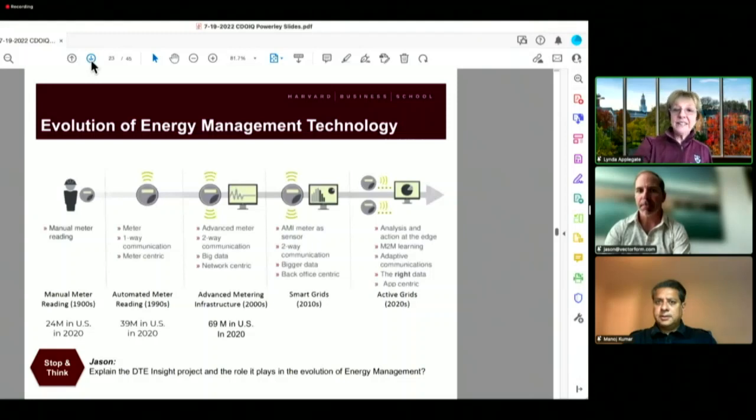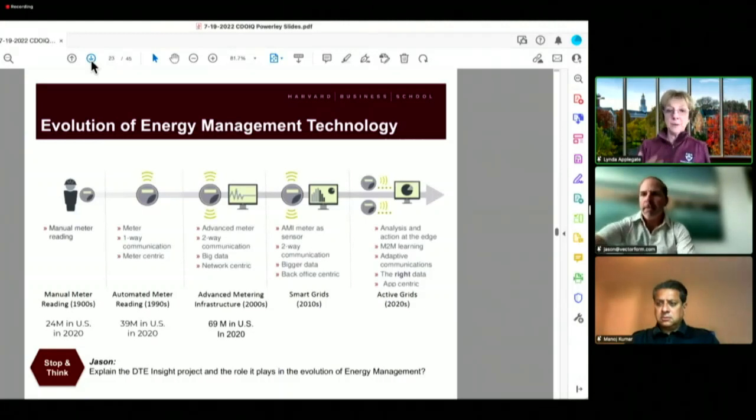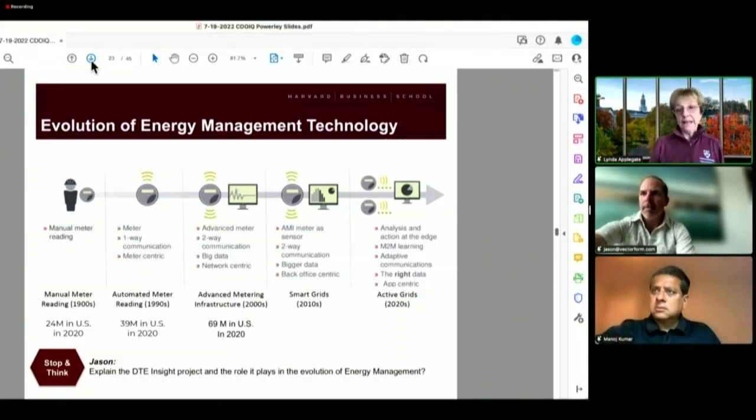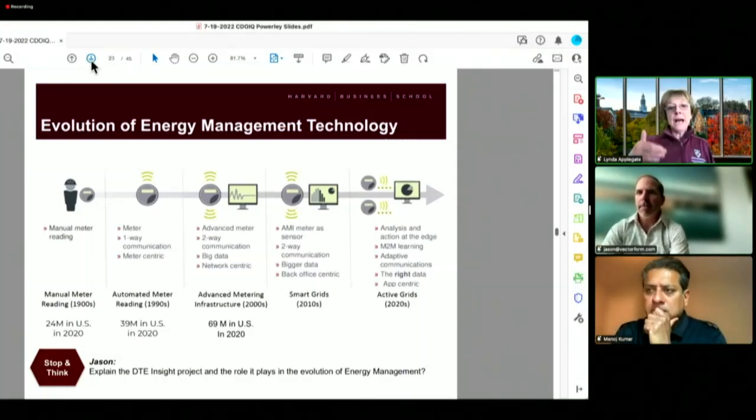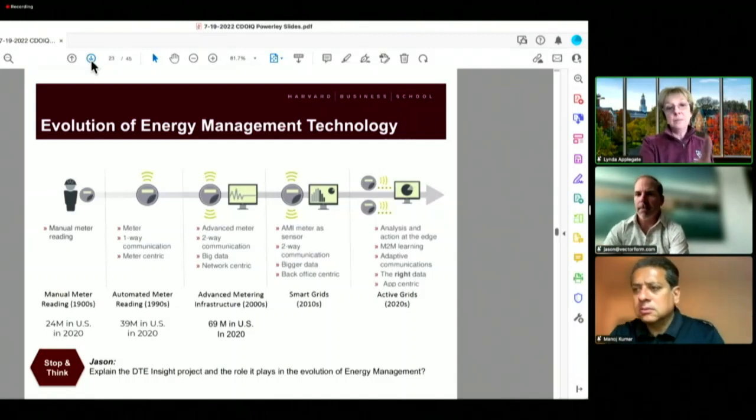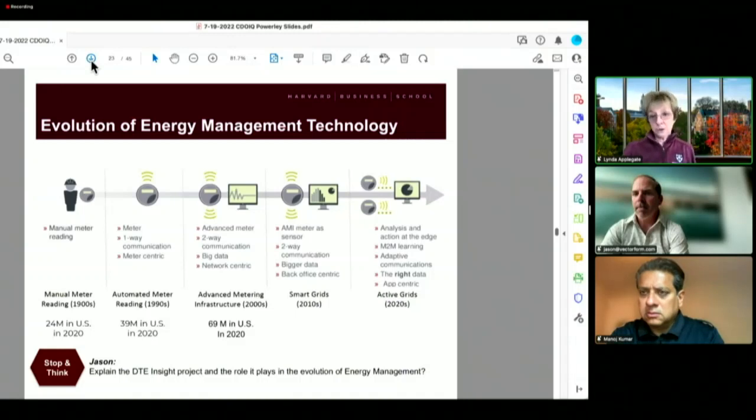So let's keep going. This is the evolution of energy management technology from manual meter readers to automated reading in the 90s to advanced metering infrastructure in the 2000 timeframe where you had a two-way communication, the concept of being able to get big data and network centricity to the meters themselves.